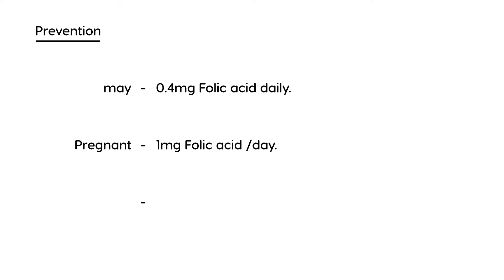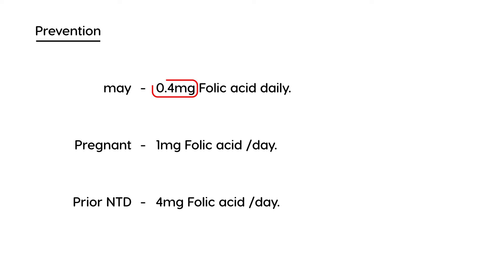If you have a woman who had a prior pregnancy with a neural tube defect, they recommend increasing folic acid to 4 mg daily. All women of childbearing age should receive 0.4 mg of folic acid daily and continue this for the first three months of pregnancy. Women with a prior baby with a neural tube defect should be on the higher dose of 4 mg.